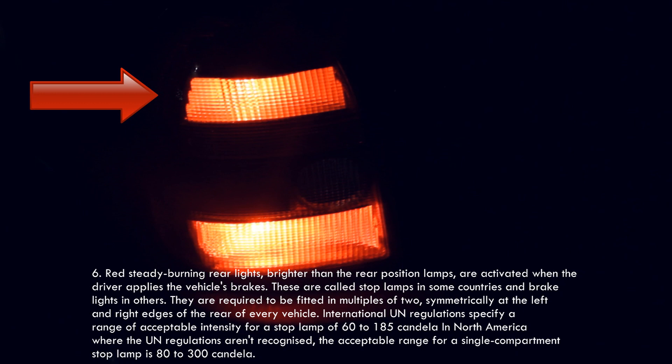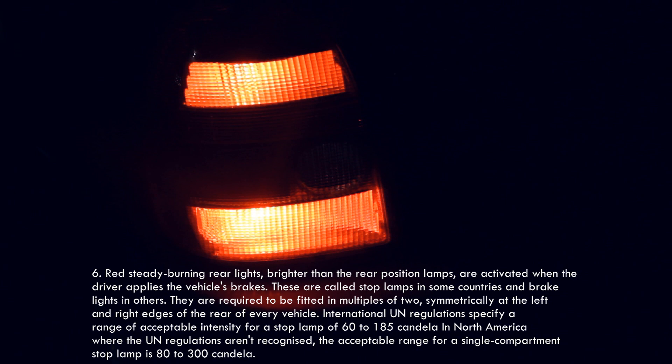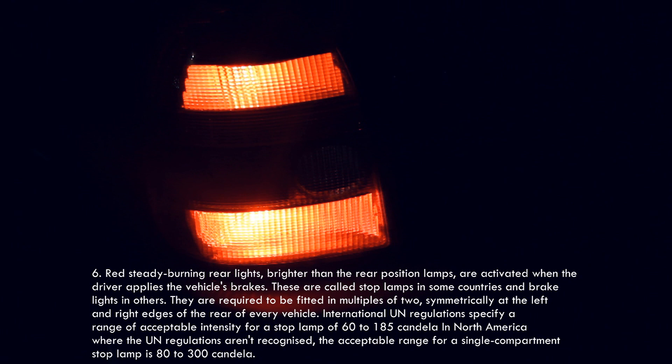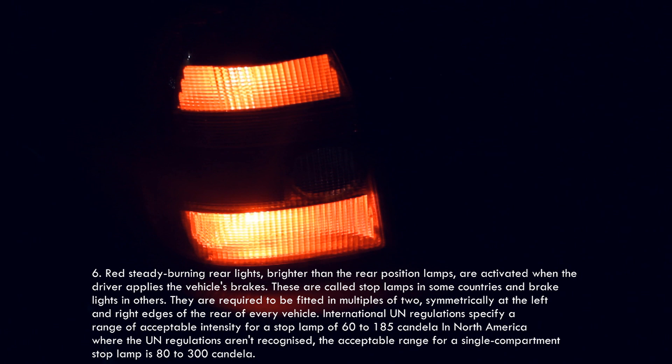Six: the brake lights. Red steady-burning rear lights, brighter than the rear position lamps, are activated when the driver applies the vehicle's brakes. They are called stop lamps in some countries and brake lights in others. They are required to be fitted in multiples of two, symmetrically at the left and right edges of the rear of every vehicle. International UN regulations specify an acceptable intensity range of 60 to 185 candela; in North America, the acceptable range for a single-compartment stop lamp is 80 to 300 candela.